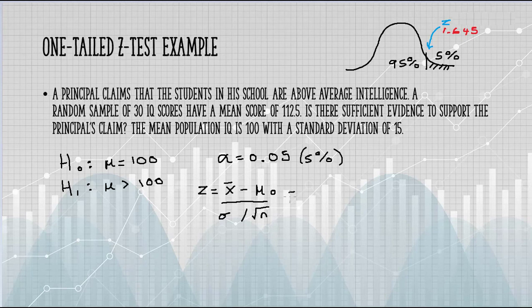We're told the sample mean is 112.5, we know the population mean is 100, our standard deviation is 15.